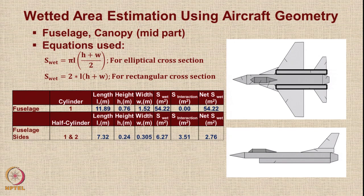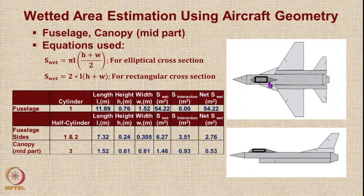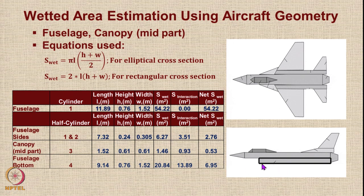The fuselage sides are two semicircular cylinders. The mid part of the canopy is a pure cylinder, and there is a fuselage bottom. All these formulae can be used to calculate the actual wetted area of each aircraft component. The numbers are provided here for comparison purposes, but you should do these calculations yourself.